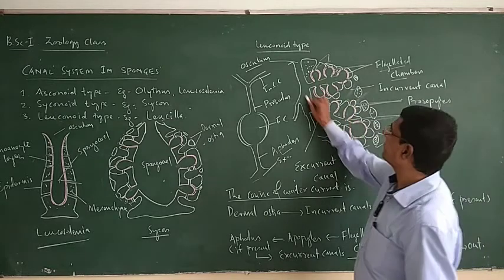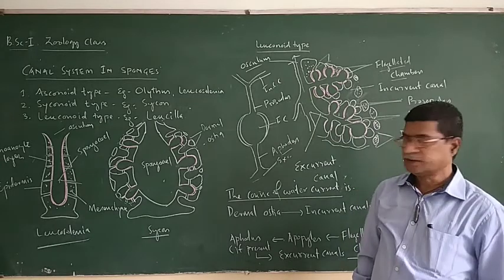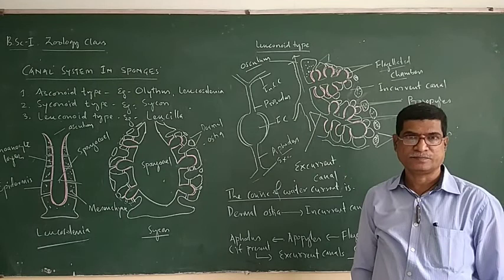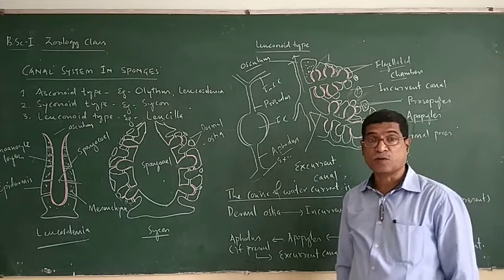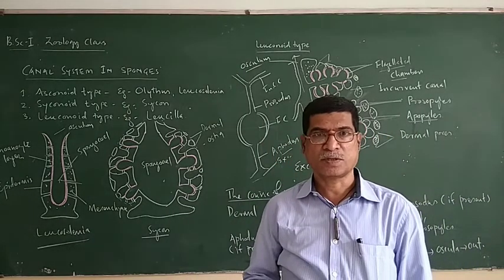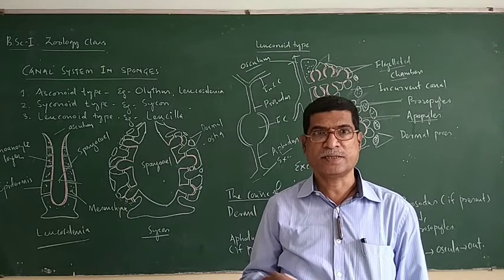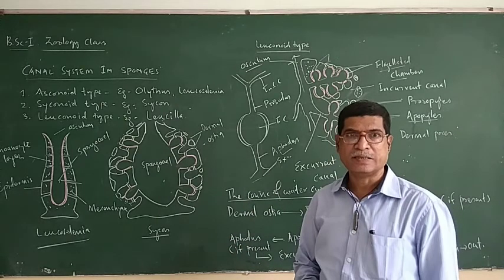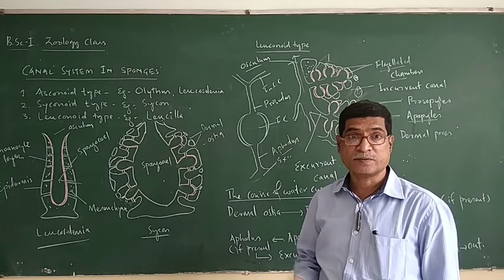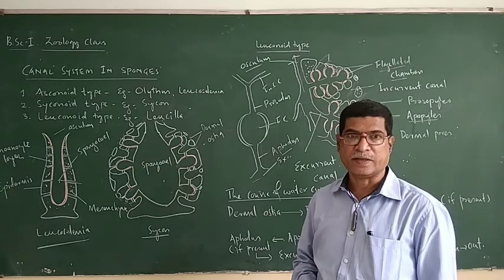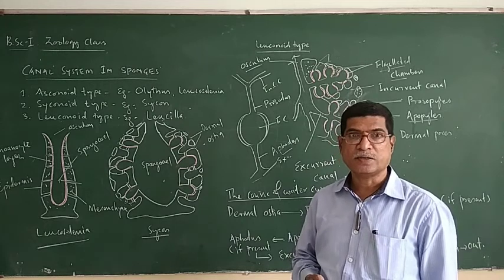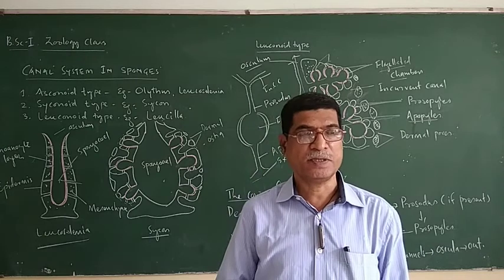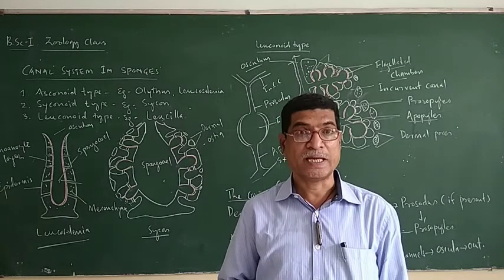So this is how the water is moving. The water canal system is the beauty of sponges — sponges only have this water canal system. This water canal system brings in food substances, food organisms, and oxygen, and supplies them to the body cells. It also removes carbon dioxide, nitrogenous waste, and undigested food material to the exterior. Sex cells are also excreted out through the outgoing water. Thus the water canal system helps in digestion, respiration, excretion, and reproduction.